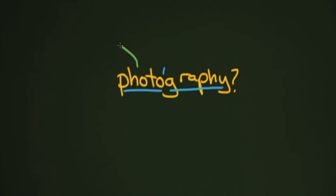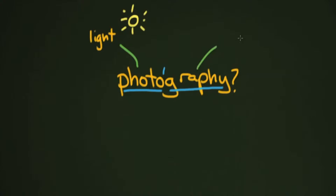Let's take a look at 'photo.' Photo is a Greek word for light — not light in the sense of heavy or light, but light in the sense of the sun, like what you see with your eye. And then you've got 'graphy,' which sort of means something along the lines of drawing. When you put those two things together, you come up with 'drawing with light.'